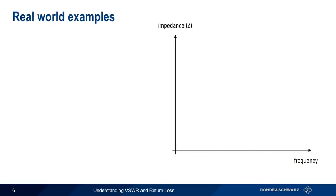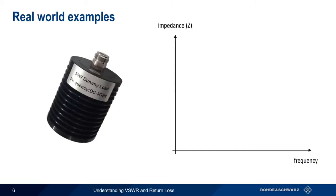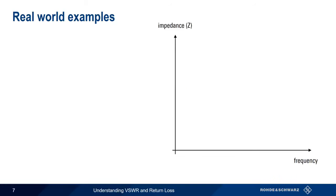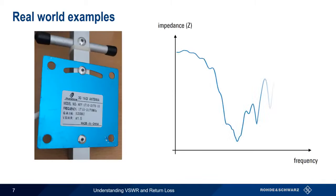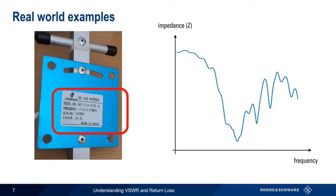How much does impedance vary by frequency? That depends on the load. A dummy load, for example, is usually a very resistive load designed to have a constant impedance over a wide frequency range. Most antennas, on the other hand, have an impedance that changes substantially by frequency. For this reason, most antennas have a specified frequency range over which they should be used. Note also that the impedance of an antenna in the real world depends on its placement relative to a ground plane or other nearby objects.